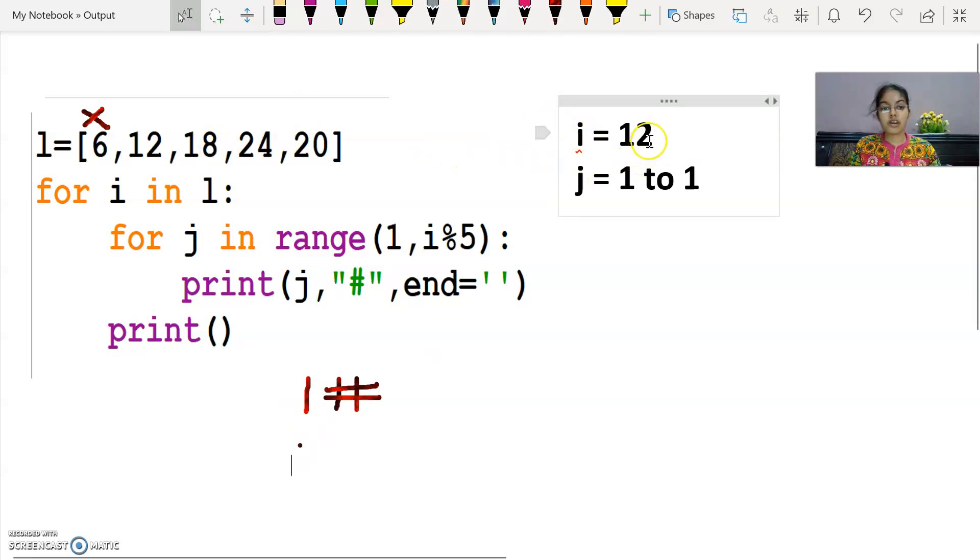Now what value will come in i? 18. Now solve this. 18 modulus 5. Divide by 5. 5 threes are 15. So 18 minus 15 is 3. Now it's 3, so my loop will run till 2. So what values will come in j? First 1, and then 2. Okay?